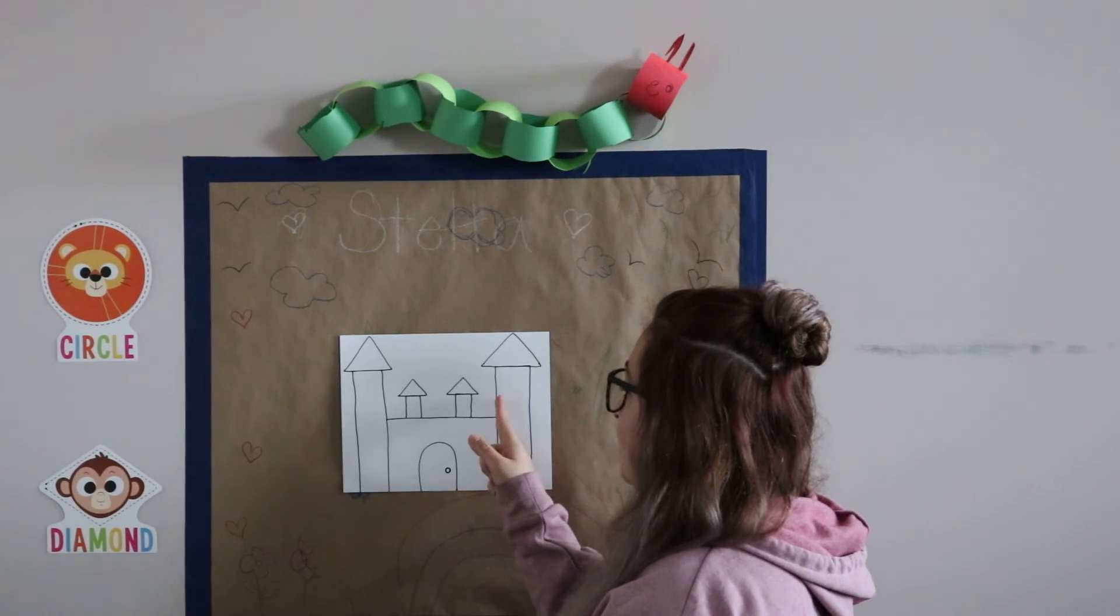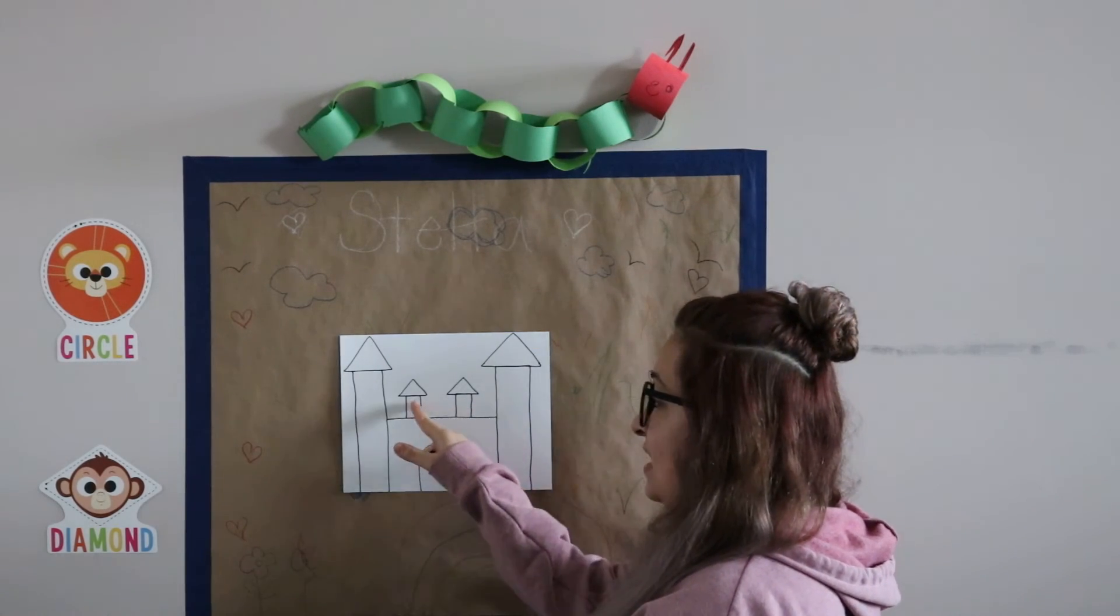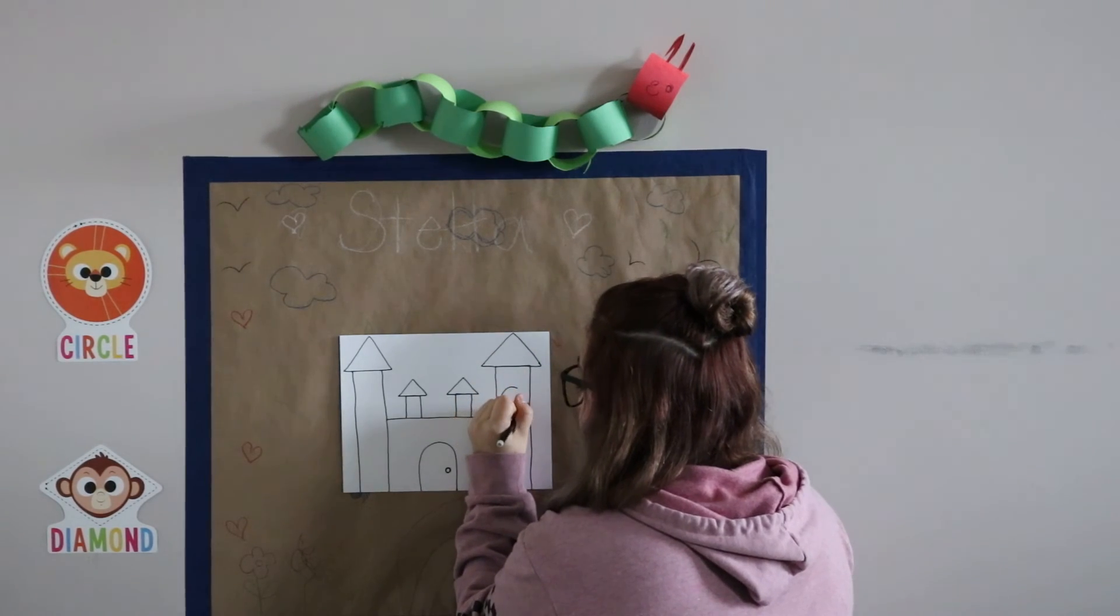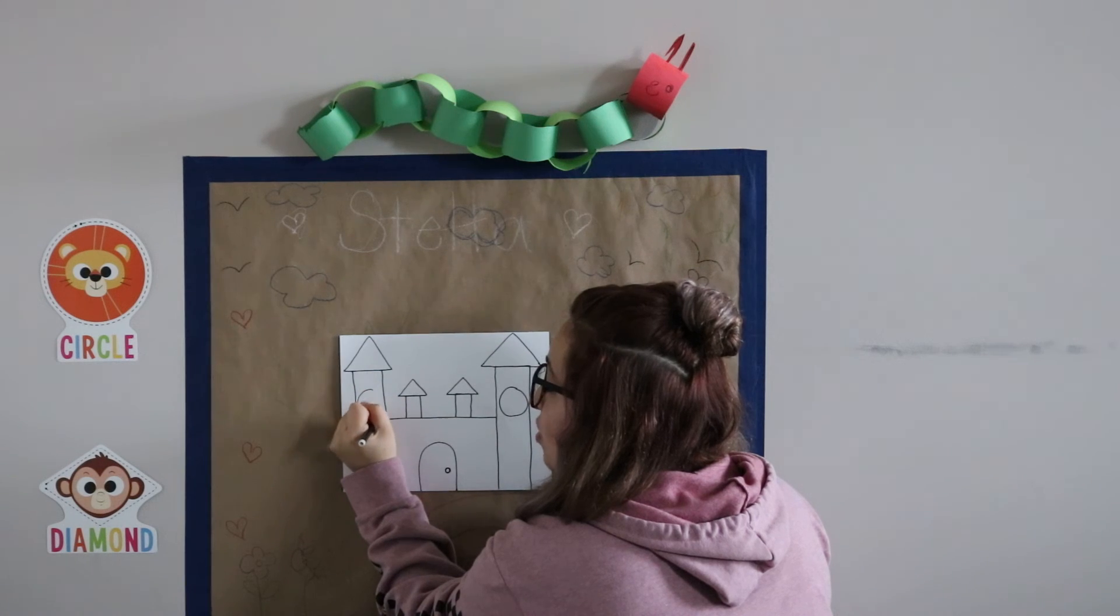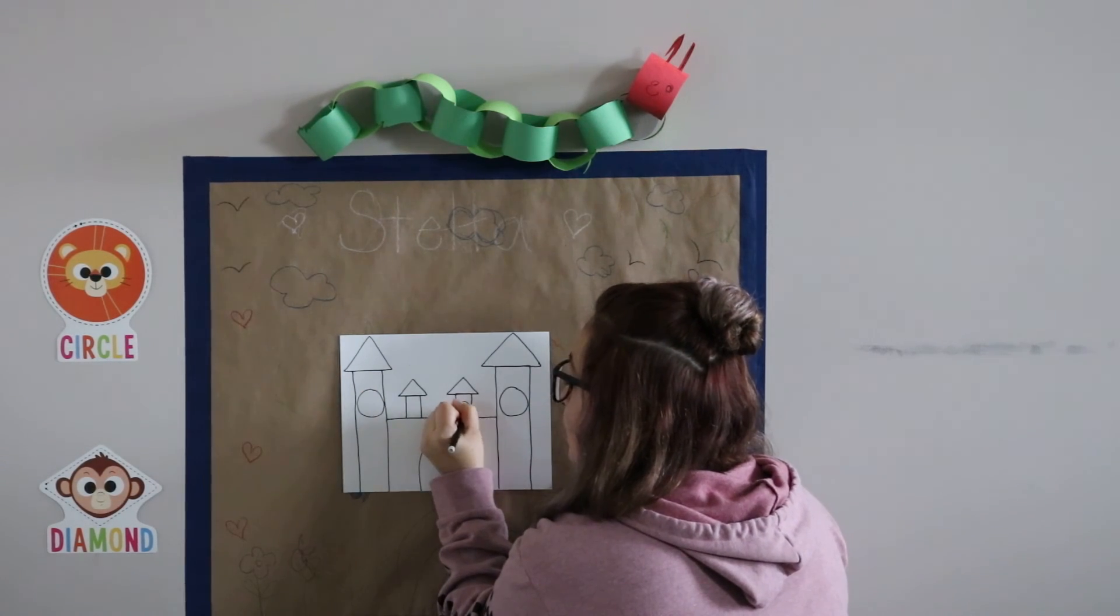And we will add some circles up here for some windows. And if you want you can put some little ones inside those too. So I am going to do one big one here. Another big window right there. And I am going to do two small ones in these.